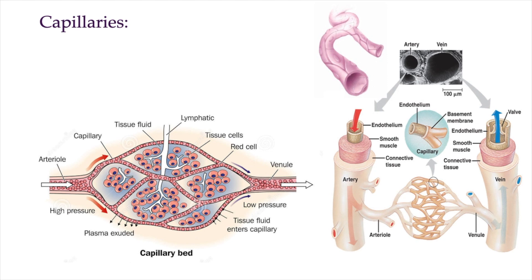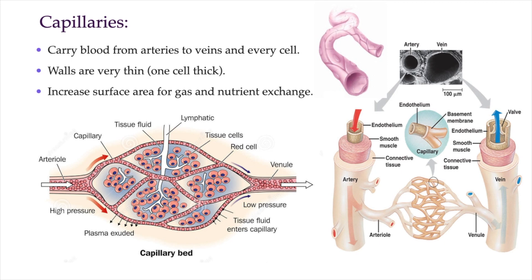As blood flows from arteries to veins, there are other smaller blood vessels like arterioles and venules, but the smallest are called capillaries. Capillaries are the thinnest of the body's vessels. The walls of capillaries are composed of a single layer of cells — so thin that molecules like gases, water, and lipids can pass right through them by diffusion and enter the tissues. Capillaries must interact very closely with all our body tissues; if the body tissue does not get any blood delivered, the cells within it will die. Capillaries make up a total surface area of about 6,300 square meters of blood vessels.